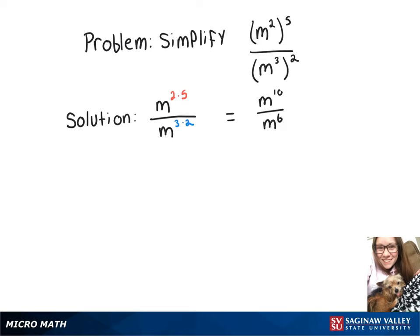And since those have the same base, now we can subtract our exponents, so m to the 10 minus 6 is m to the 4th.